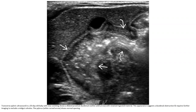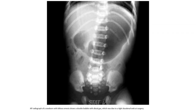Pyloric ultrasound in a twenty-day-old baby shows a dilated proximal duodenum with distended contrast-filled lumen. The imaging findings suggest that further evaluation was required to exclude other causes, with the pylorus showing no abnormality. The diagnosis of duodenal web was ultimately confirmed at surgery.